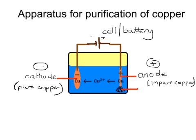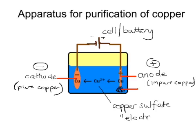Electrolysis occurs using a solution which contains copper sulfate. This solution is called the electrolyte. Finally, we have a sludge — an anode sludge — which is made out of all the parts of that impure anode that don't dissolve into the solution.